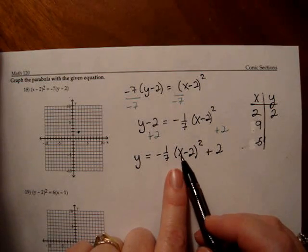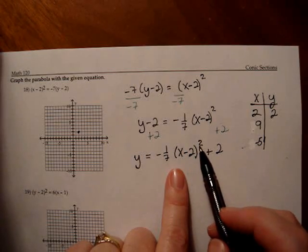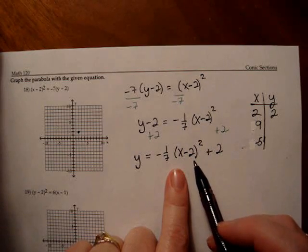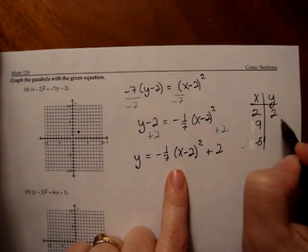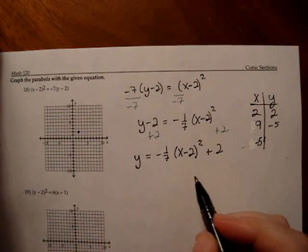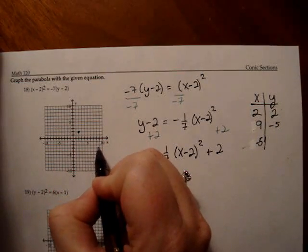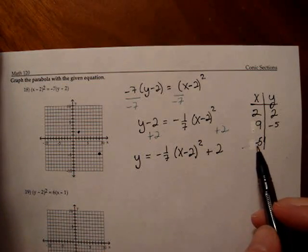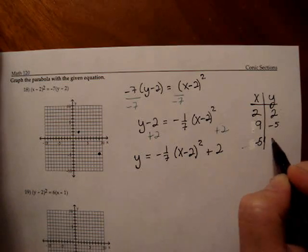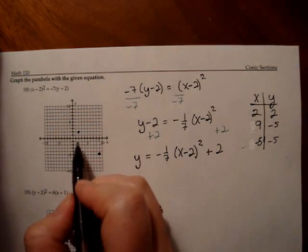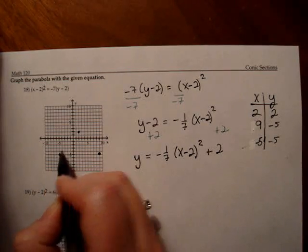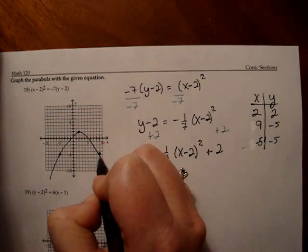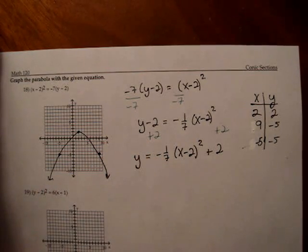If x is 9, I'll get 9 minus 2 is 7, 7 squared is 49, negative 1/7th times 49 is negative 7, negative 7 plus 2 is negative 5, hey how about that. So when x is 9, y is negative 5, which is here. Then I do the same thing with the negative 5, and it turns out I also get y is negative 5 because of symmetry. And now I connect those, and I have this wide parabola. Excellent.